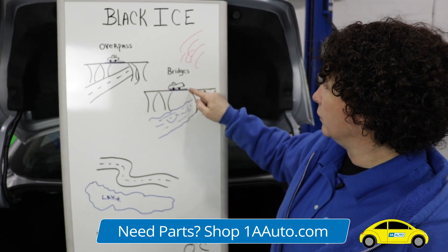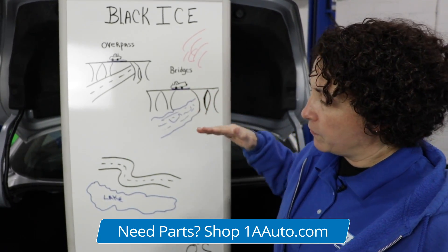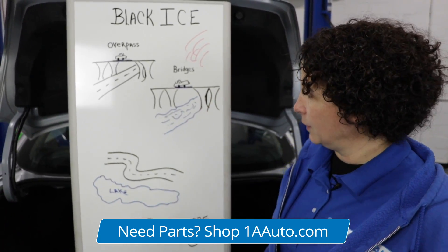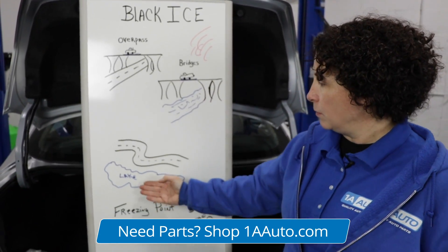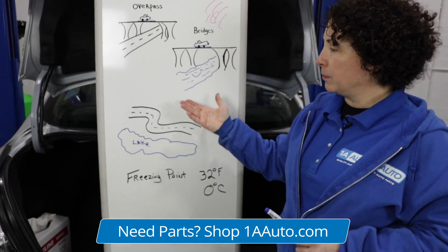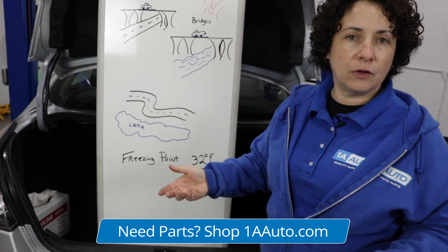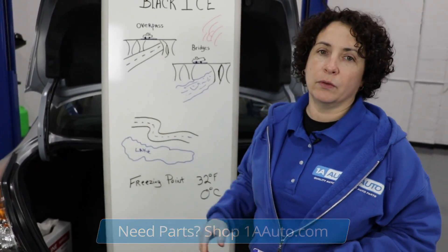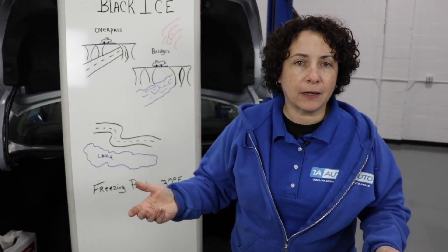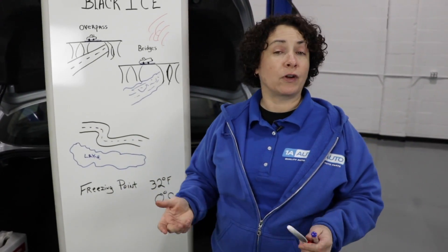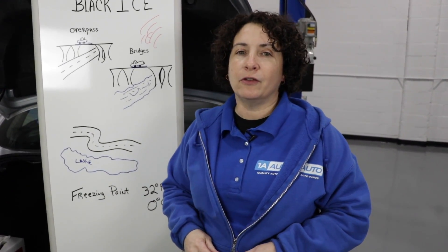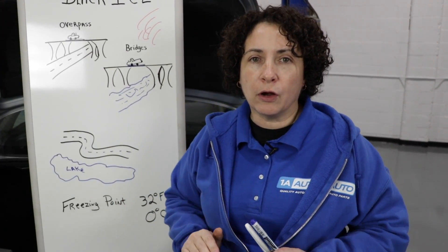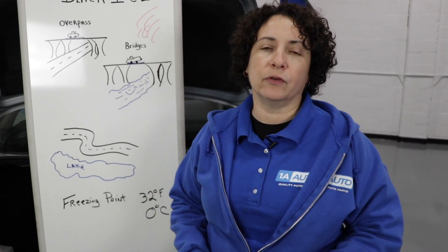Heat comes in, warms up just the top — black ice again. Moisture by lakes, ponds, the ocean will do the same to the front road. Now you have parking lots, your driveway, your steps. This all happens from warm air swooping in when it's freezing temperatures.